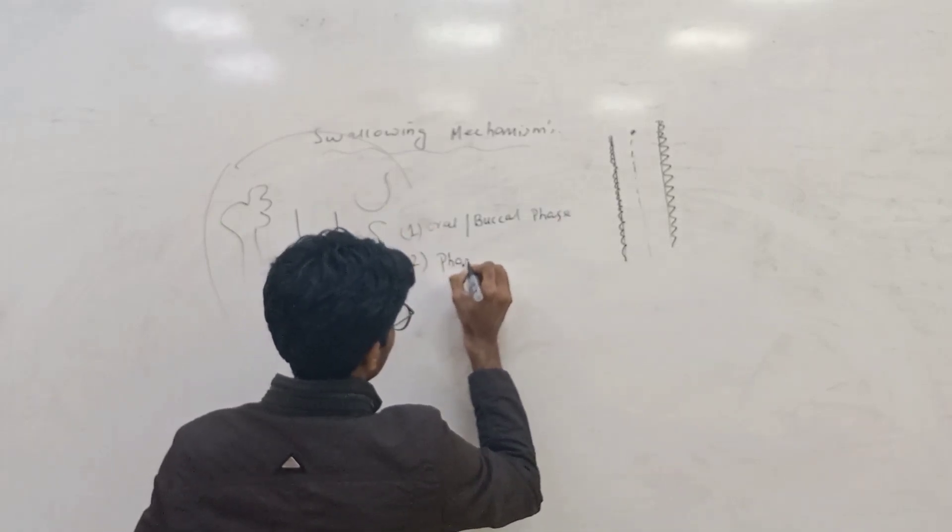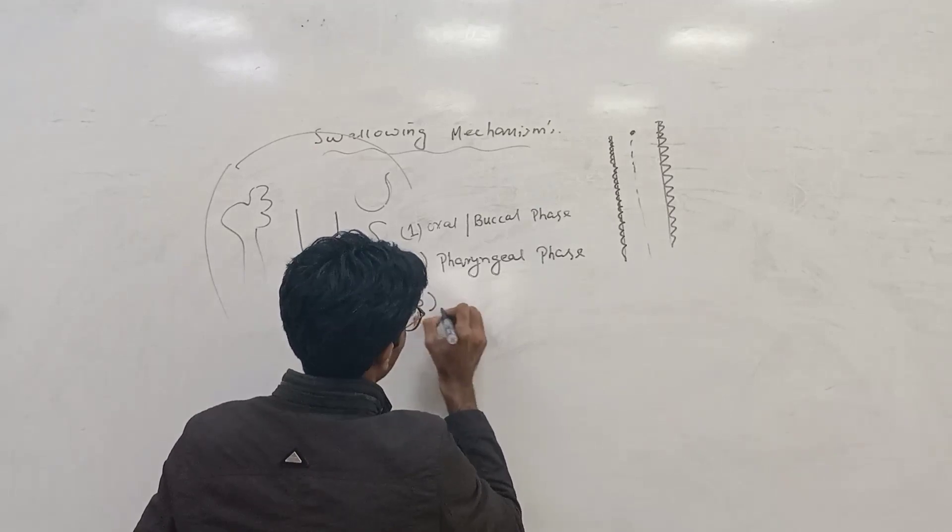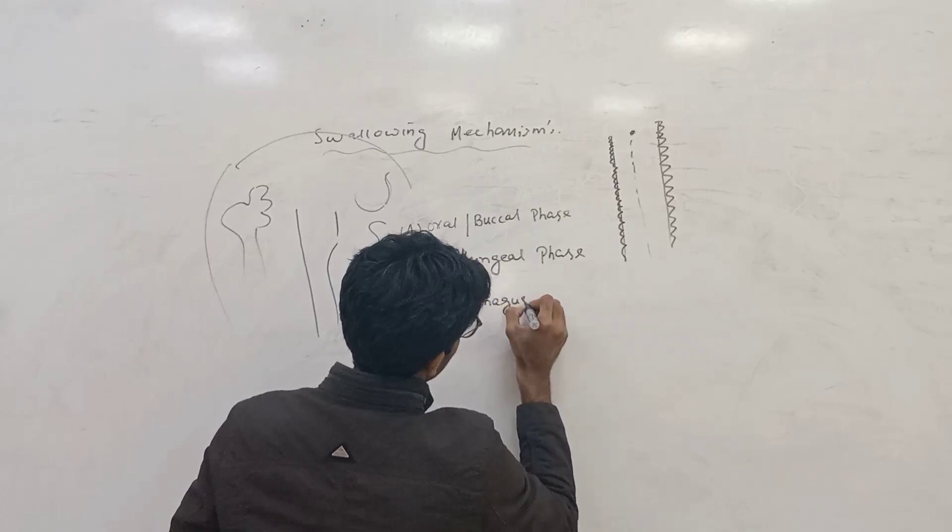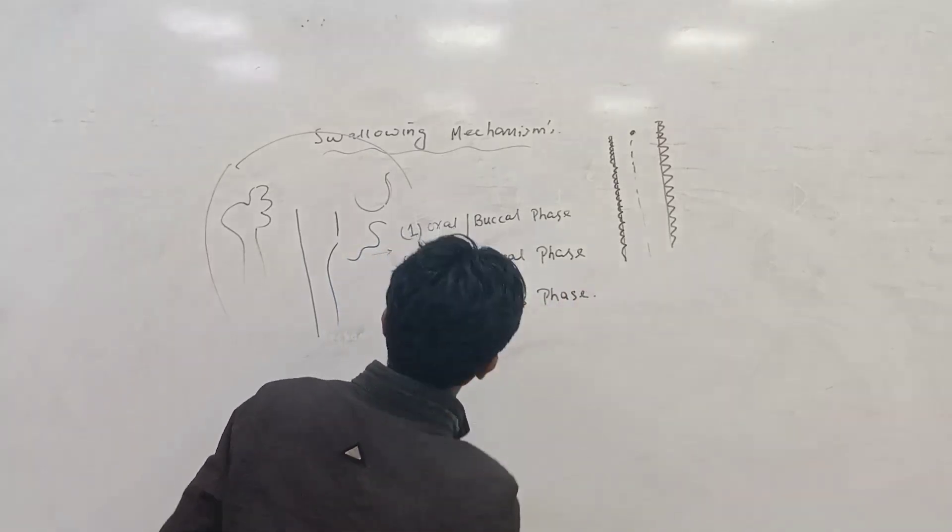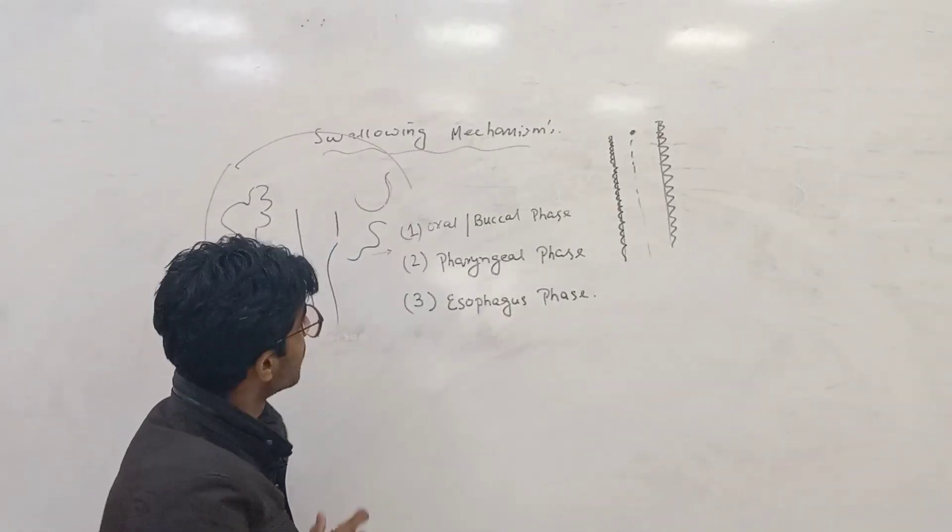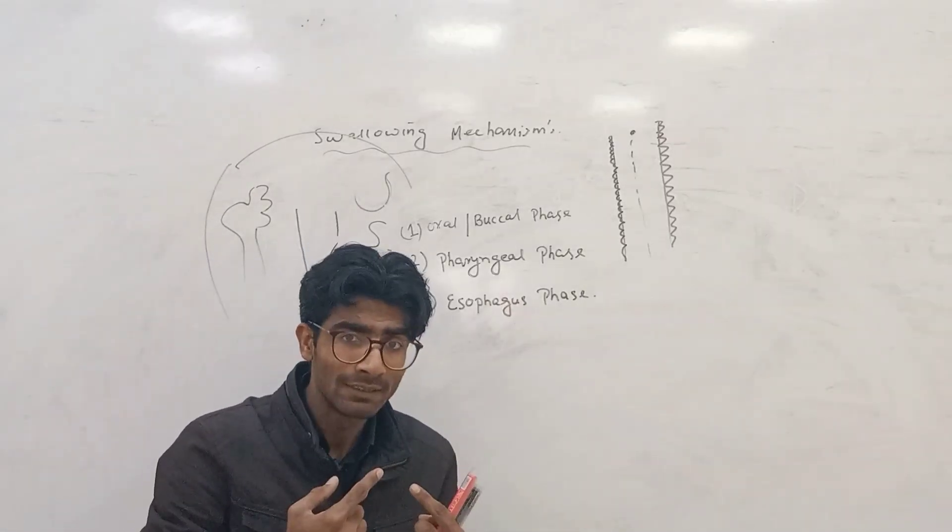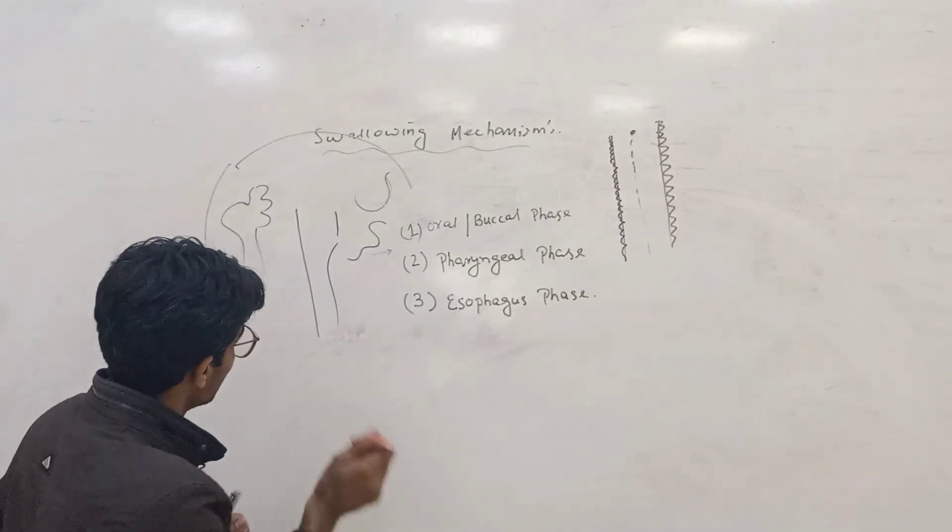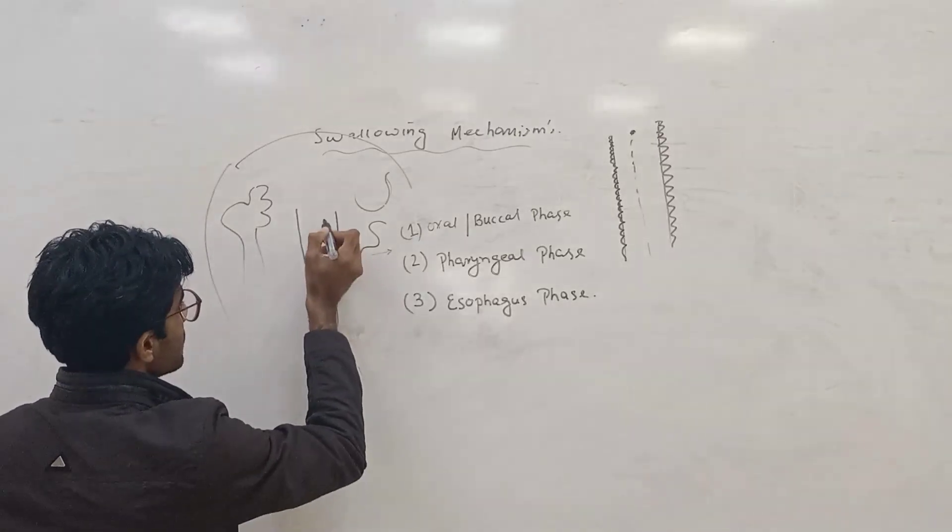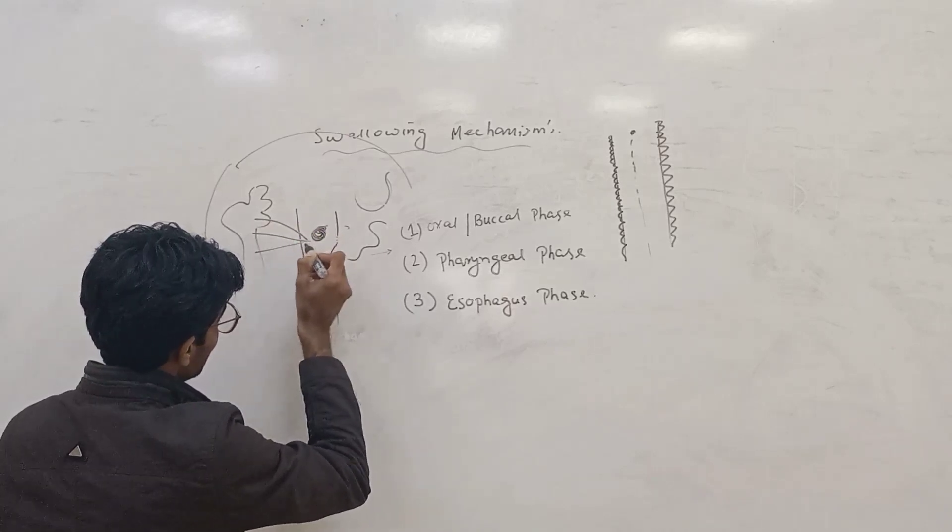Third is esophageal phase. These three phases are involved in the swallowing mechanism. First, in the oral phase, the food goes into the oral cavity and formation of bolus occurs with the help of teeth. The bolus has mucus formation here with the help of nerve sensation and motor activity.